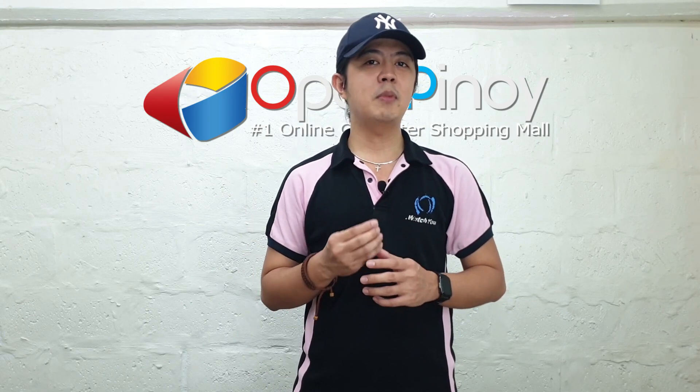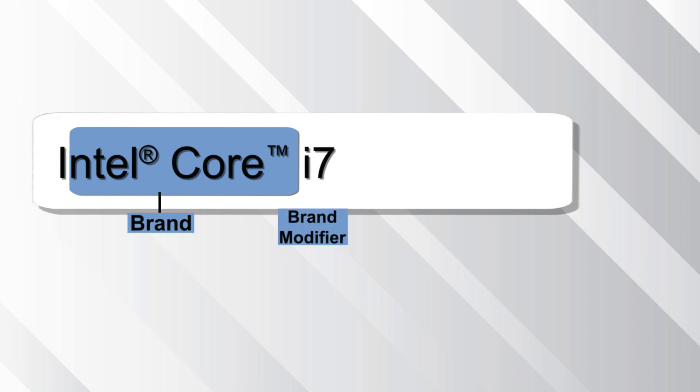Let's talk about the processor names. Intel naming scheme starts with the processor's brand. The most common Intel processor names begin with Intel Core, which includes a brand modifier before the remaining parts of the model number. Intel Pentium and Intel Celeron processors do not use this naming convention.